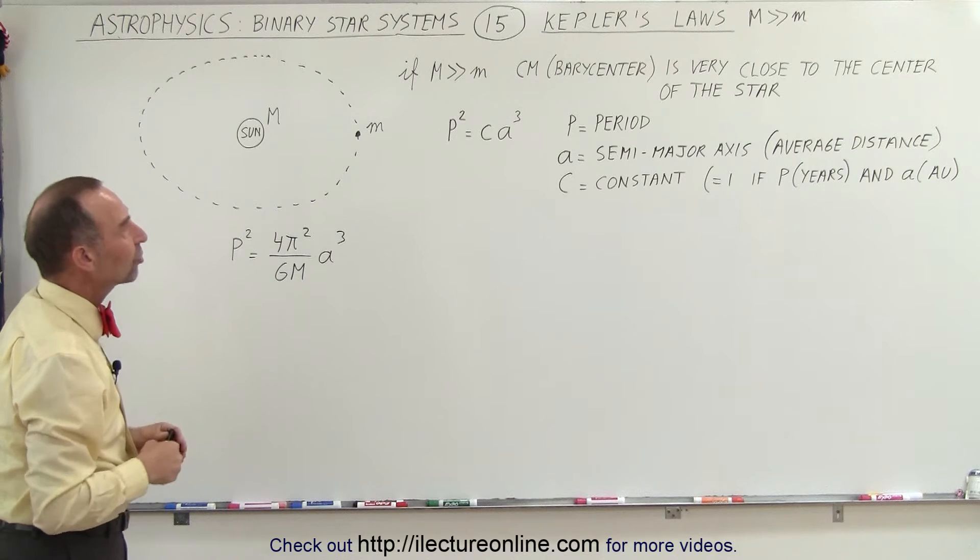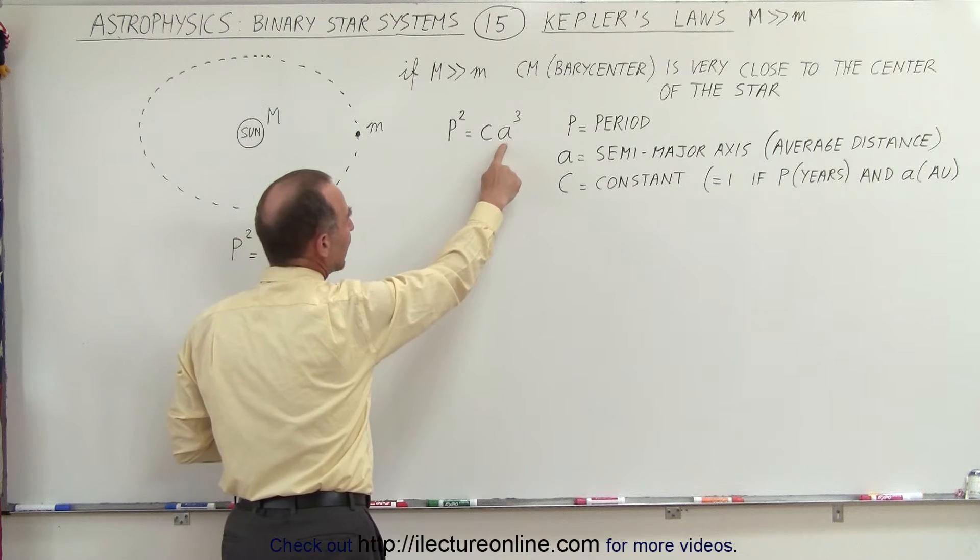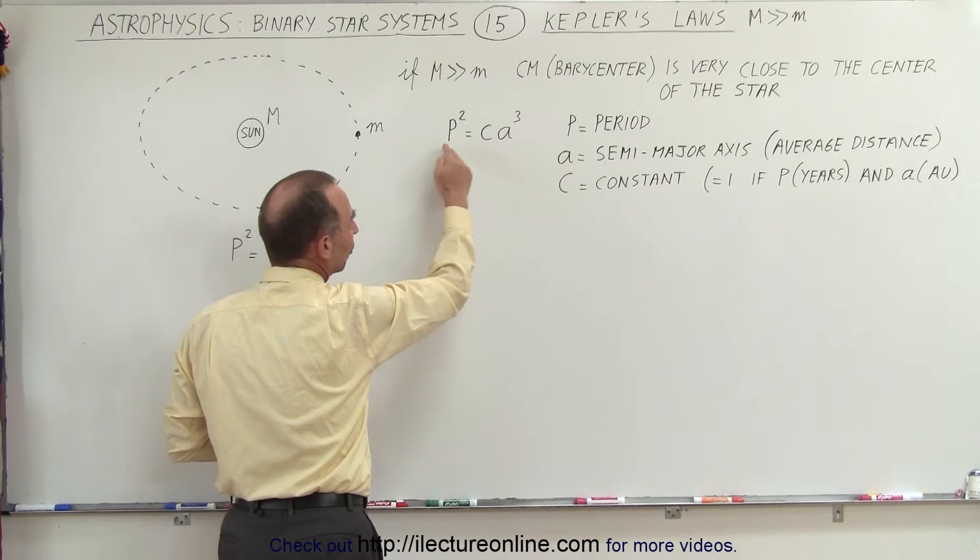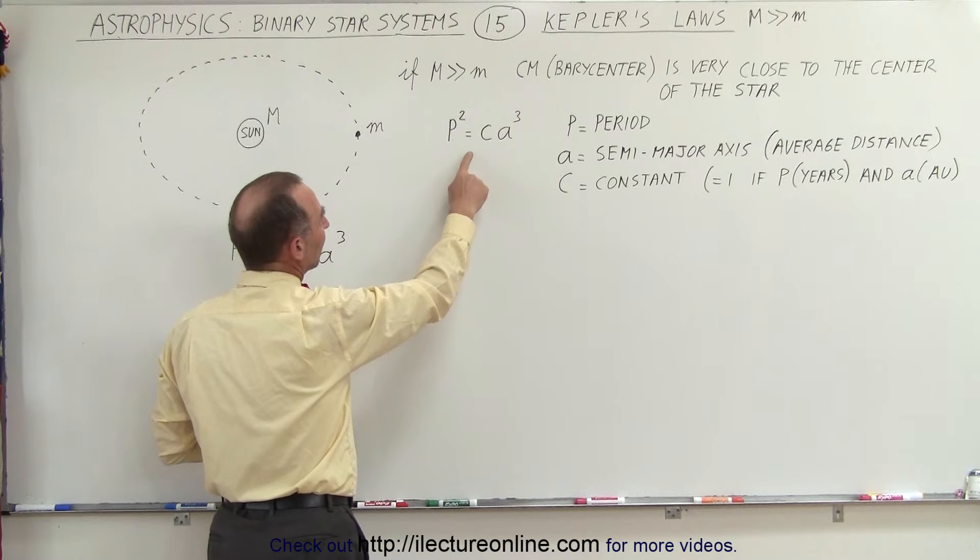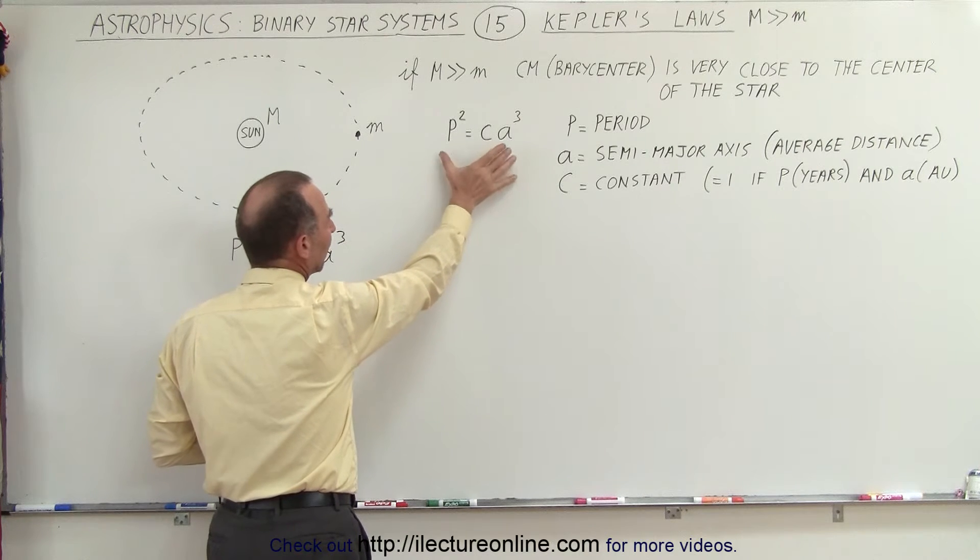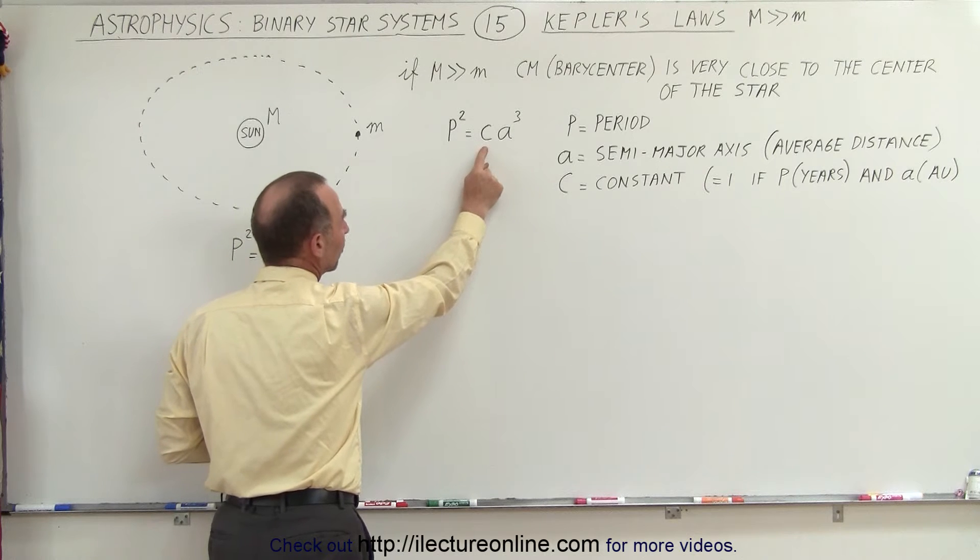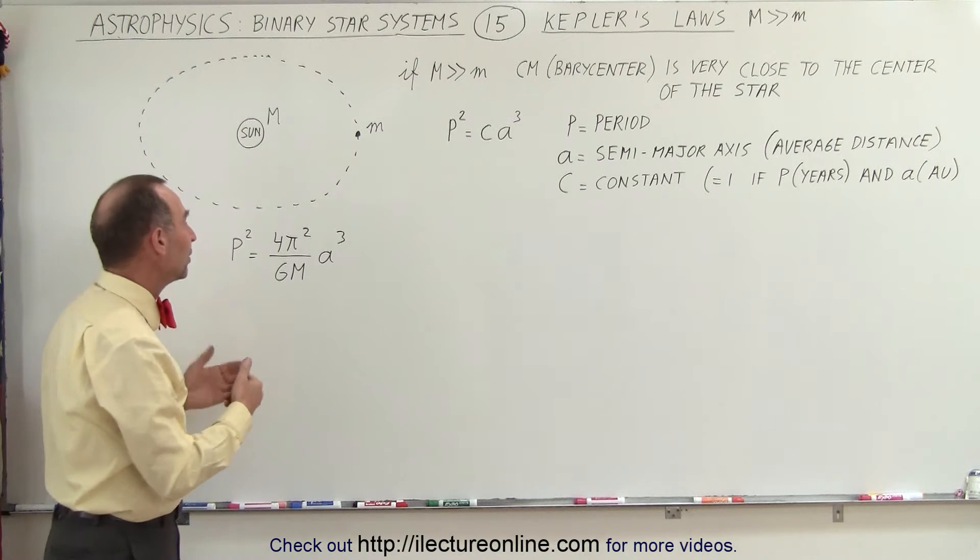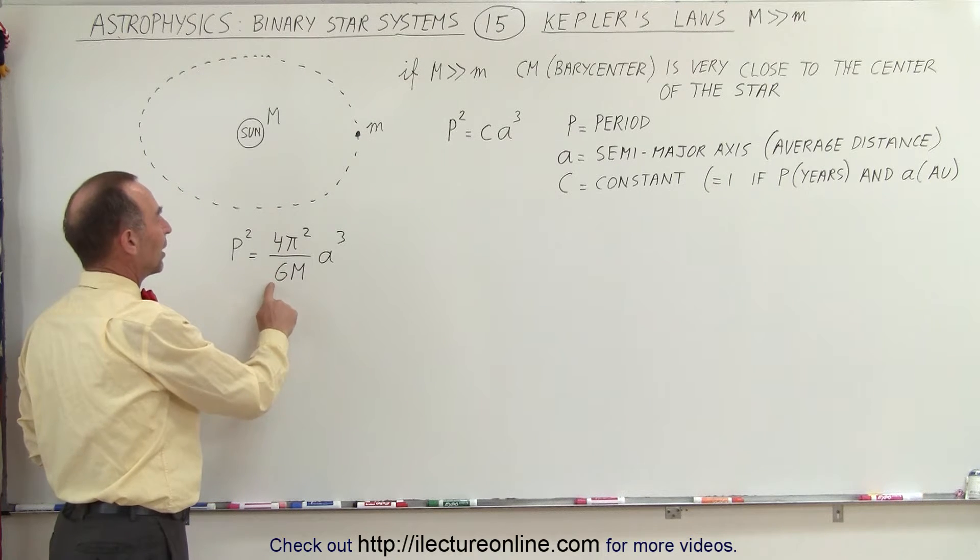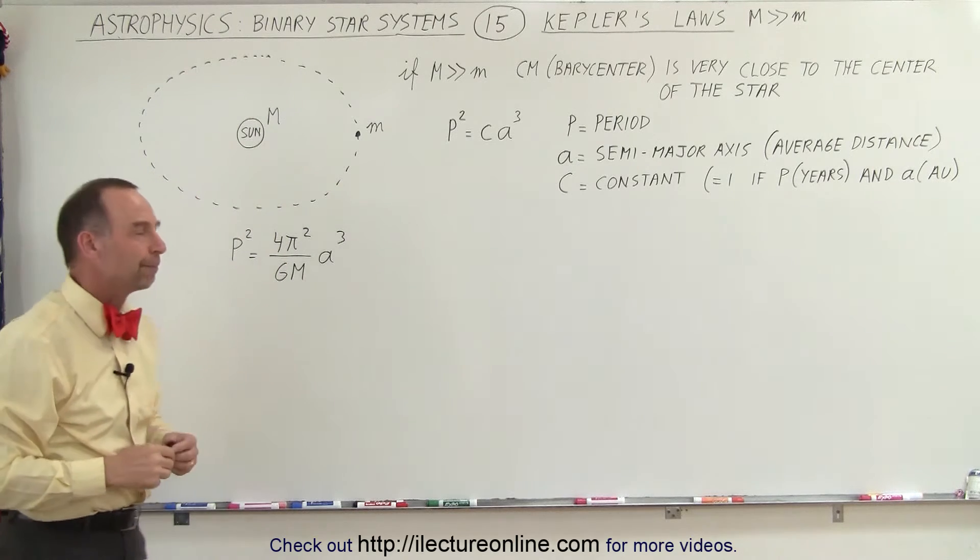But Kepler did discover that there's a relationship between the period and the average distance between the planet and the star, also known as the semi-major axis. We knew that there was a constant that related those two to one another, where P² is equal to a constant times a³. Now that constant has been determined to be 4π²/(GM). How do we determine that?